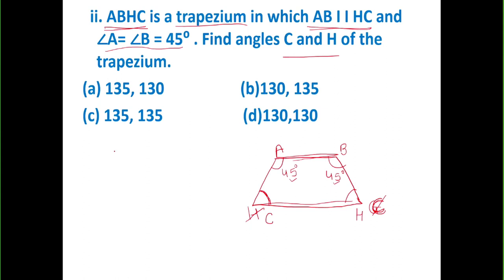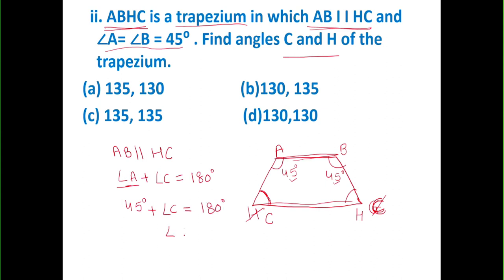To find angle C and angle H, we know that AB is parallel to HC. If AB and HC are parallel to each other, then the sum of angle A and angle C is 180 degrees — the reason being co-interior angles. This concept was learned in lines and angles. From this, we find angle C equals 135 degrees, and similarly using angle B, angle H is also 135 degrees. The final answer is 135 degrees each.